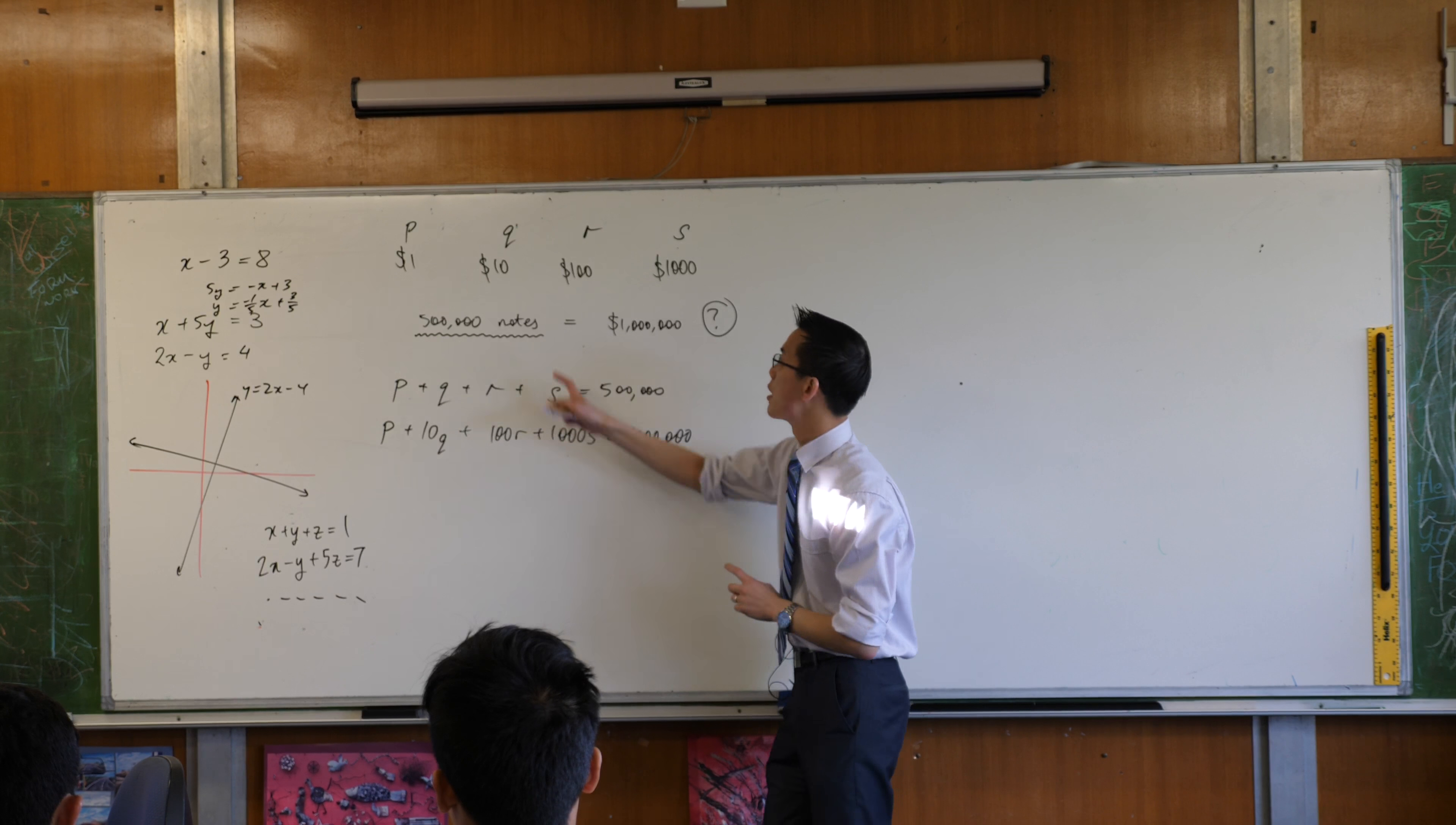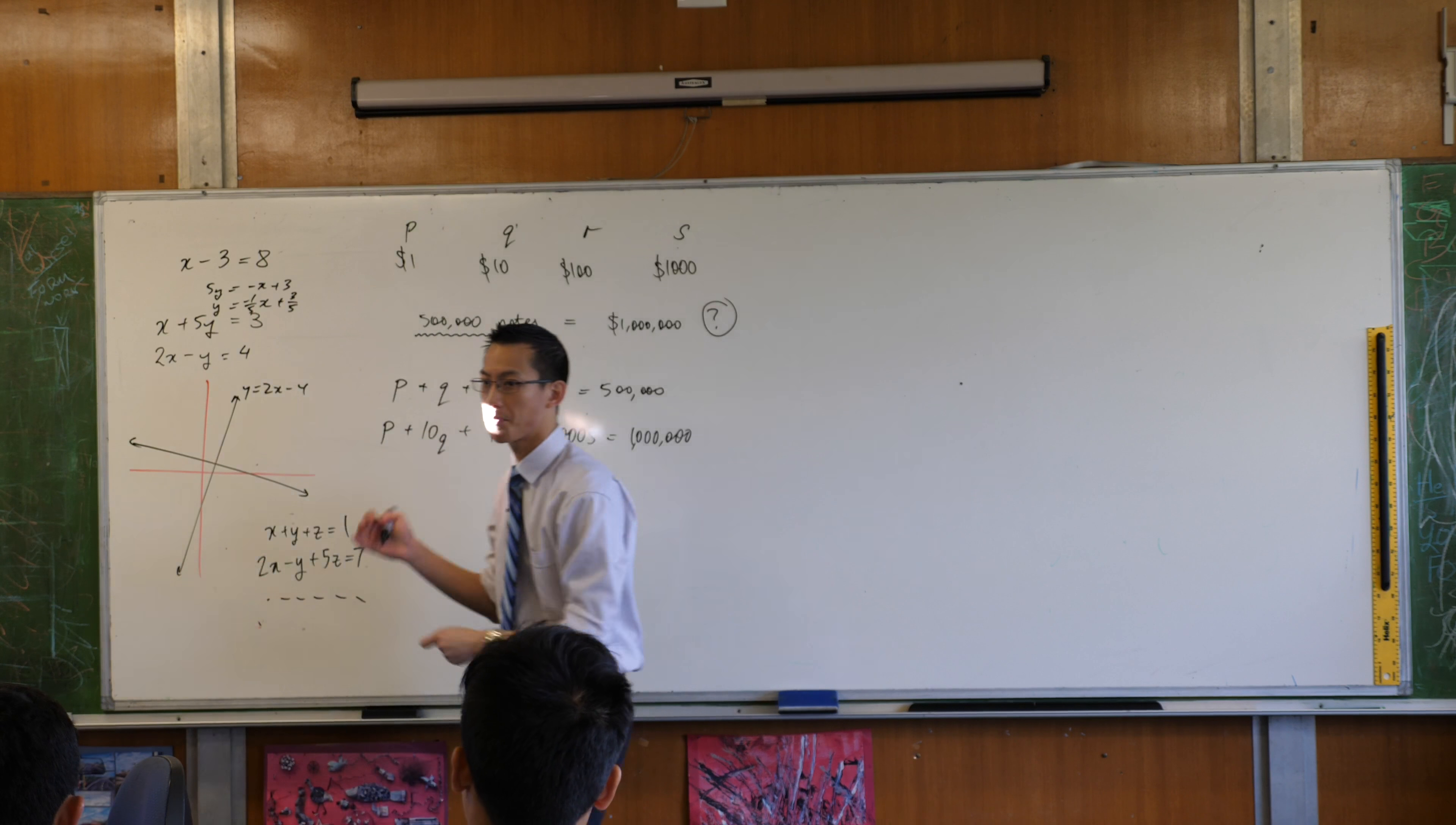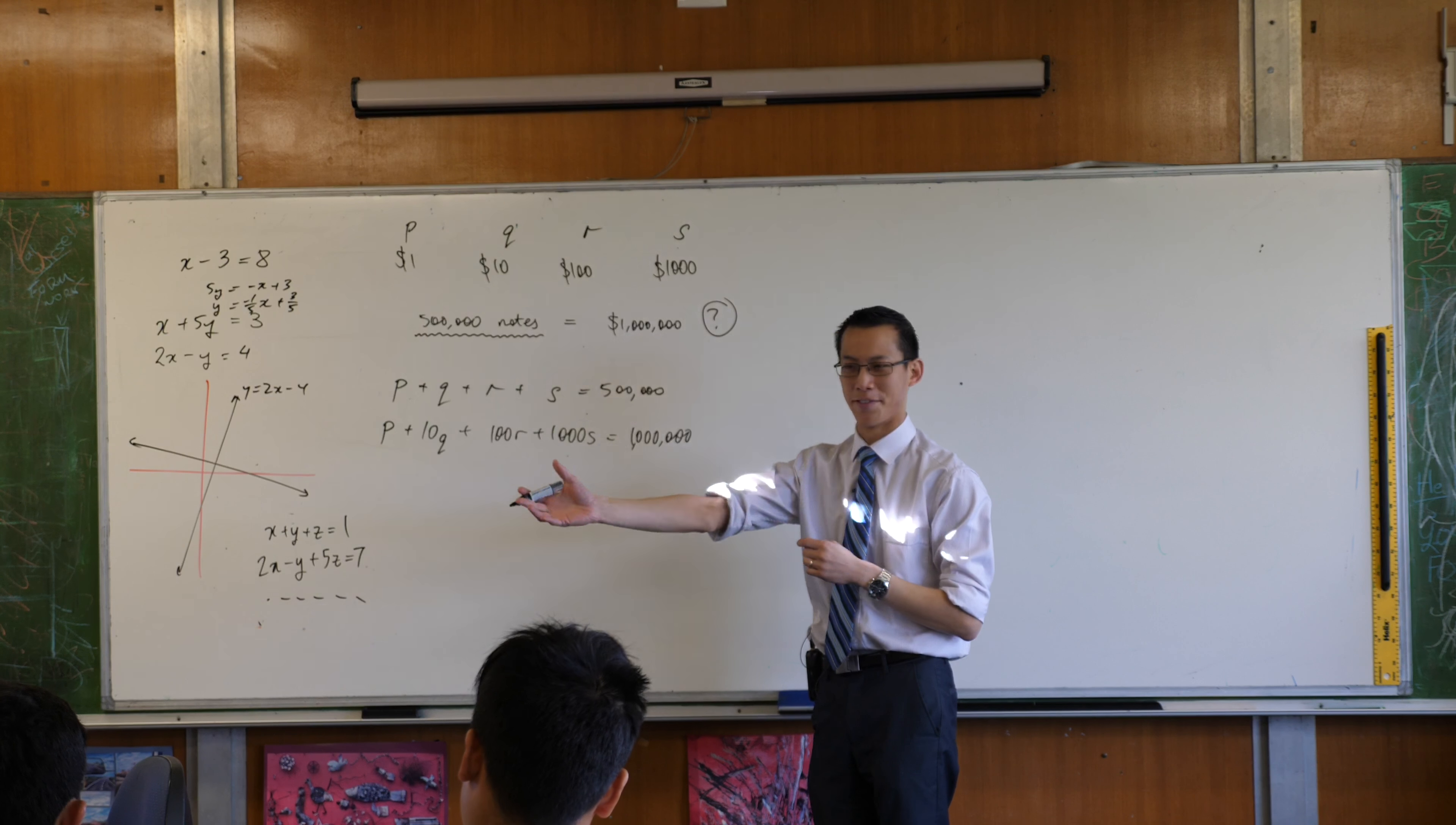So therefore what that implies is that P, Q, R and S are not just any numbers. They are a specific kind of number and you have language for this. What kind of numbers are they? They're going to be whole numbers. Integers is close but they're not just integers because integers can also be negative. At least you'd hope that I don't have negative $5 notes.